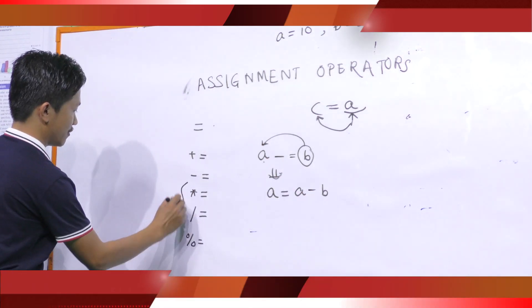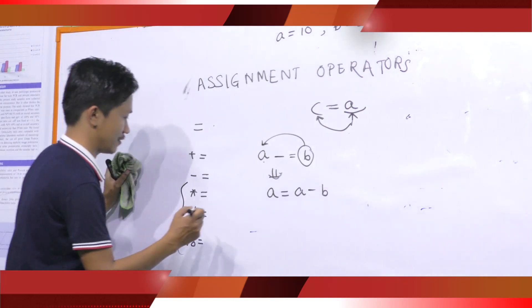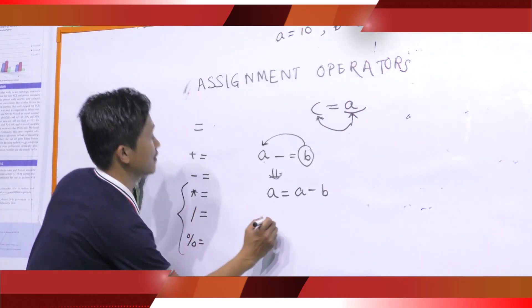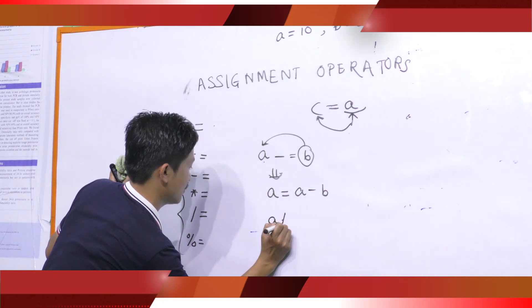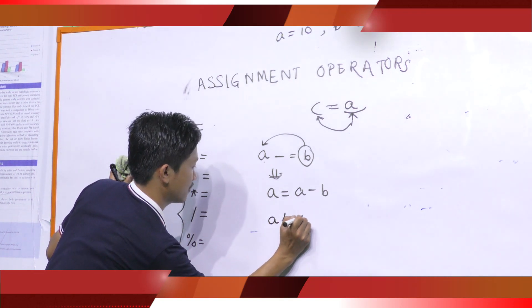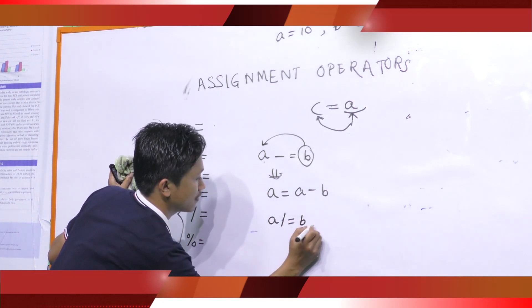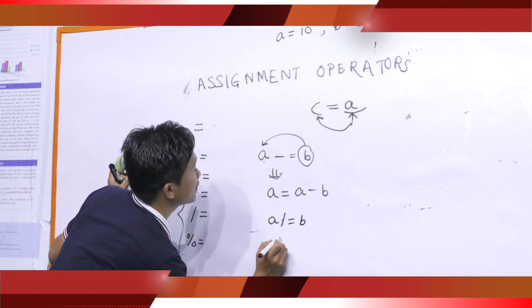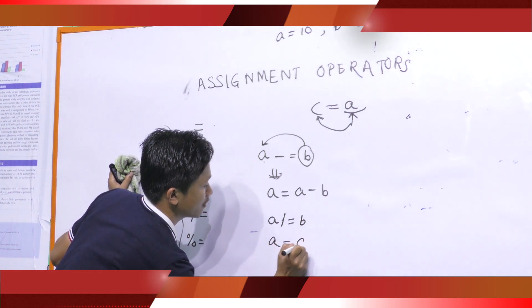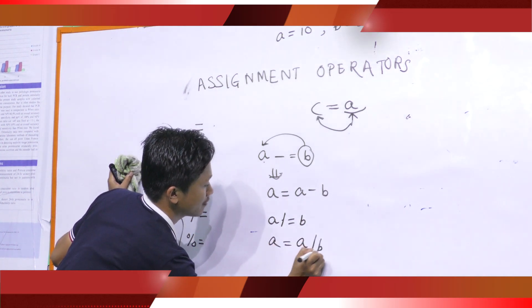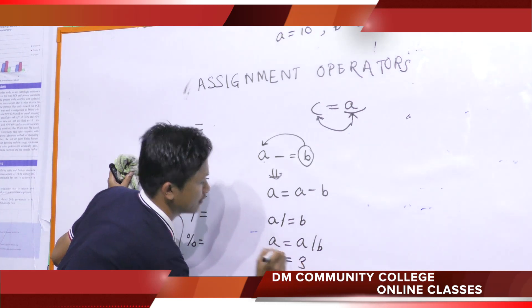The same thing happens for all compound assignment operators. For example, A /= B will return the value A = A / B, which means A equals 3.